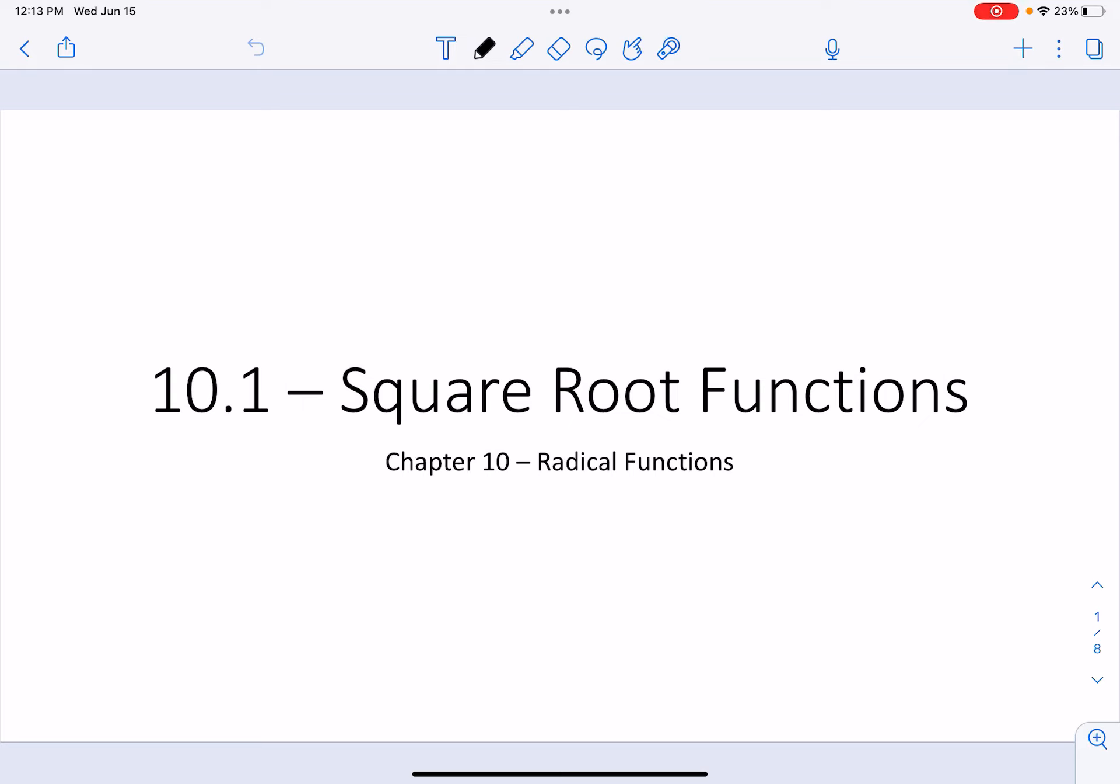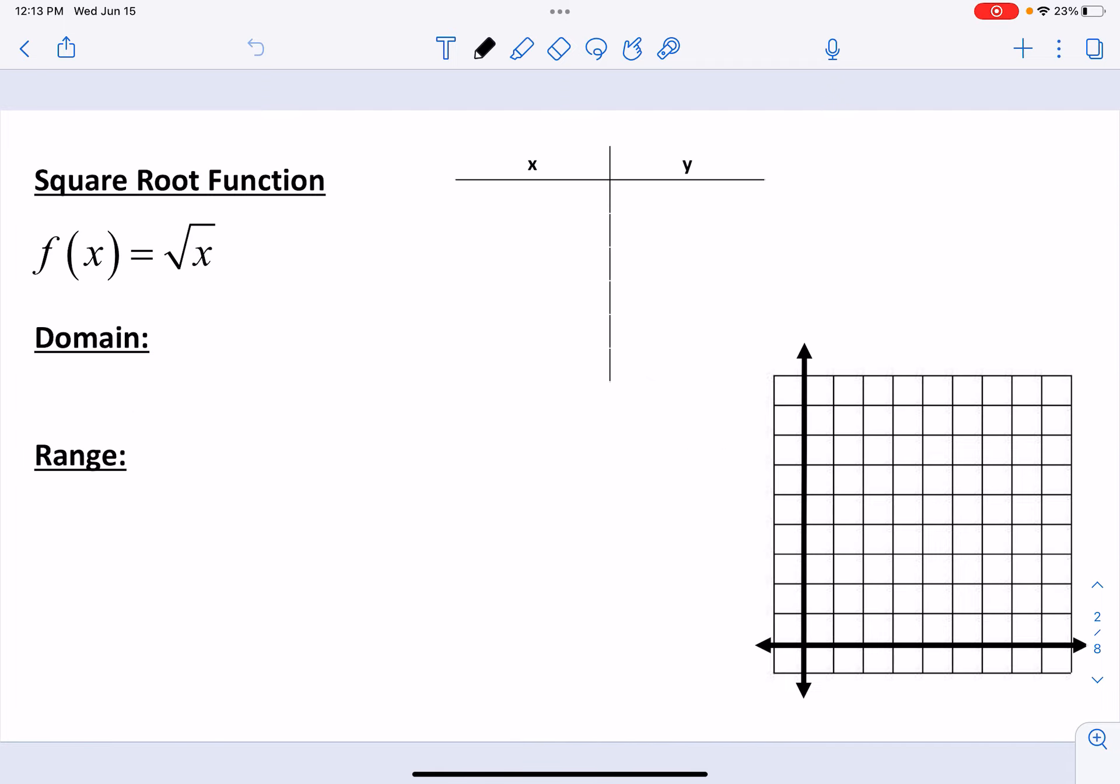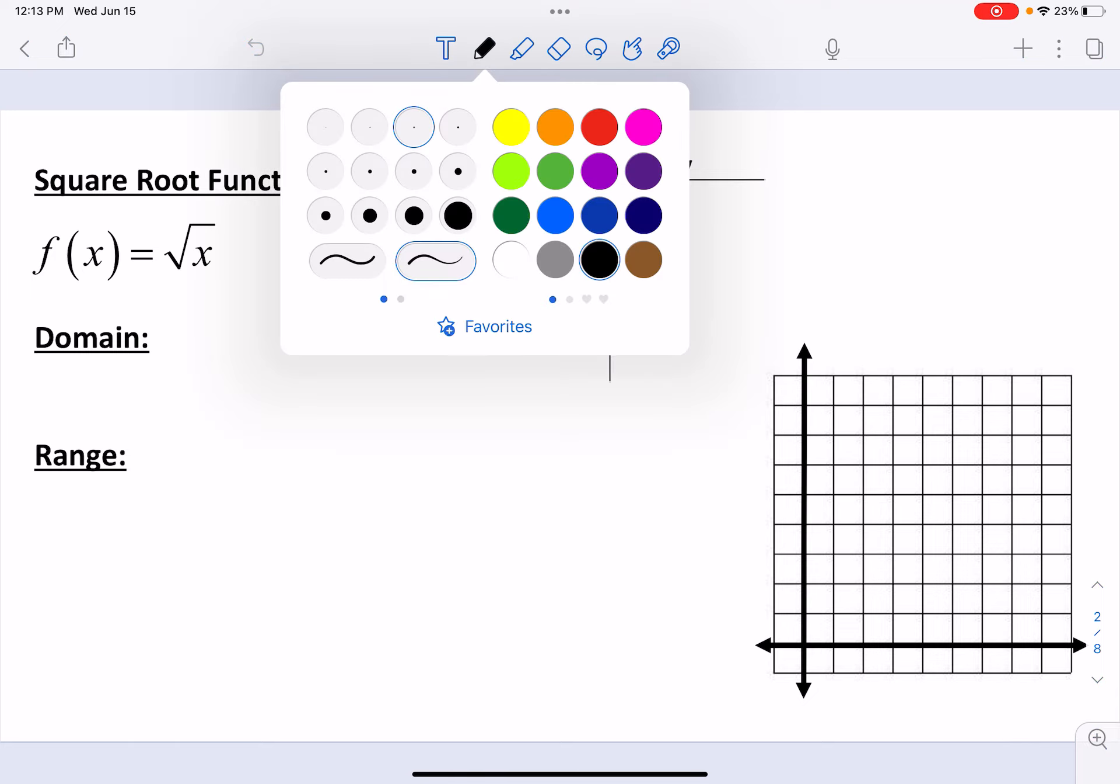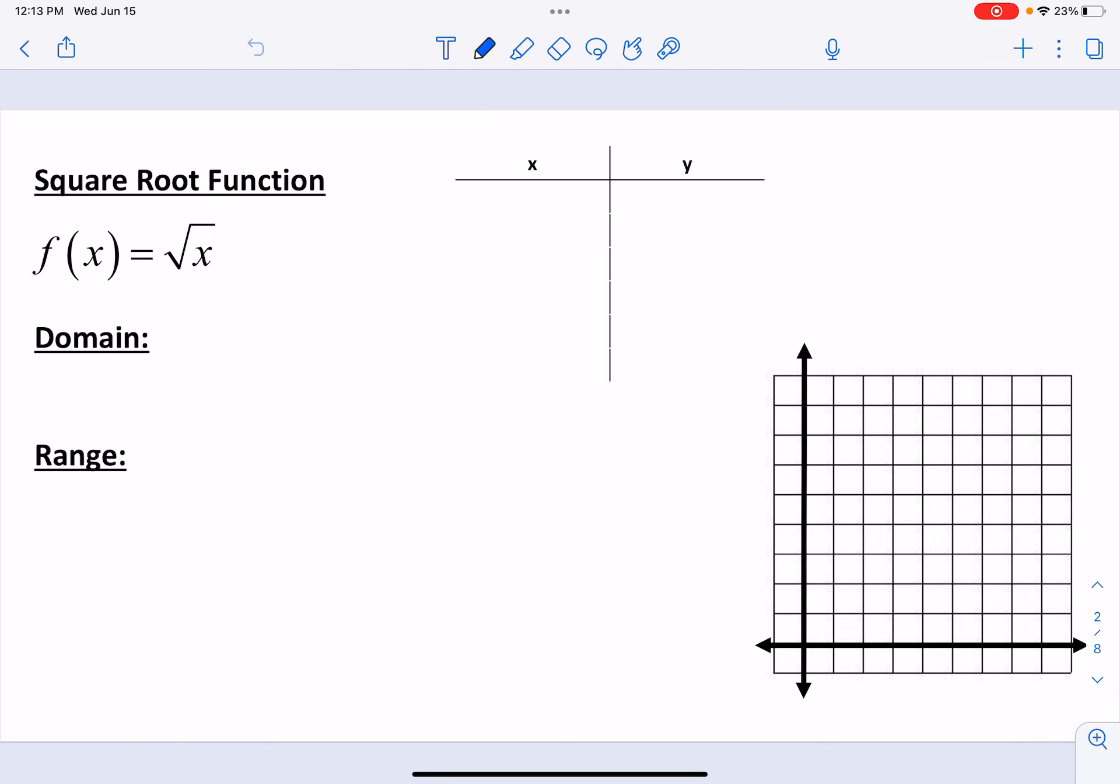Today we're going to be talking about the graphs of square root functions. So a square root function, f of x, equals the square root of x. And so let's pick, I want to get an idea of what this graph looks like with you.